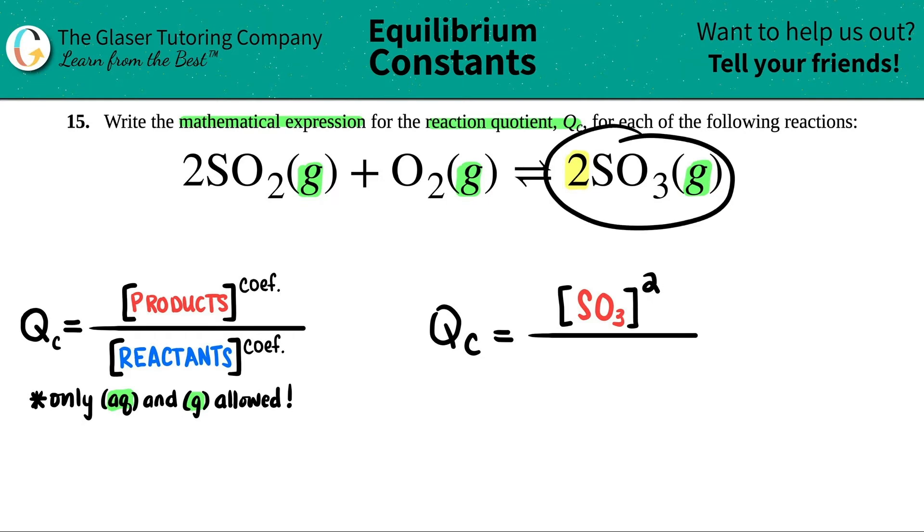Now that's the end for the products. So now let's move on to the reactants. I got two reactants. They're both gases, so both are going to be included. It doesn't matter which one you start with. I'll just work from left to right. So I have SO2. So I'm going to write that in brackets, SO2.